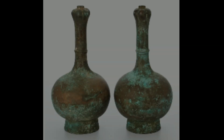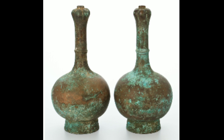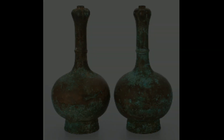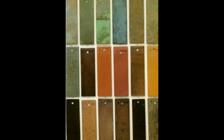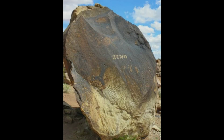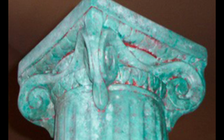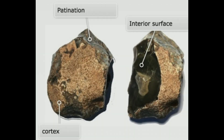Patination is the production by oxidation of a green or brown film on the surface of bronze or similar metals. It refers to the chemical alteration of rock or other metallic artifact surfaces exposed to atmospheric conditions. The amount of patina on a stone is an index of its age, valuable for the relative placement of a stone artifact in technological development.